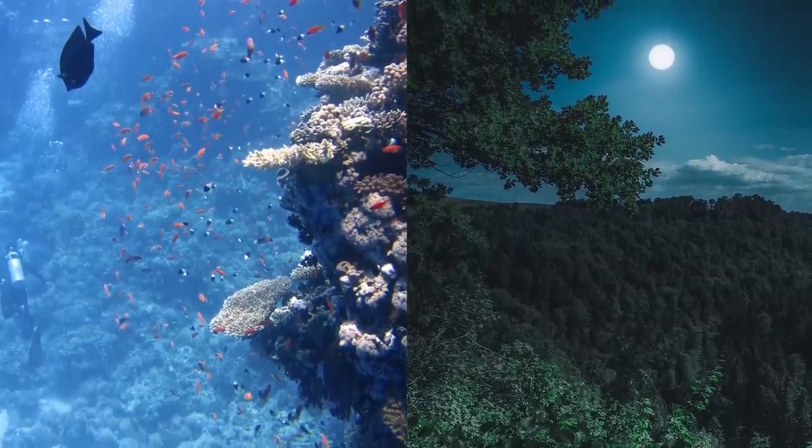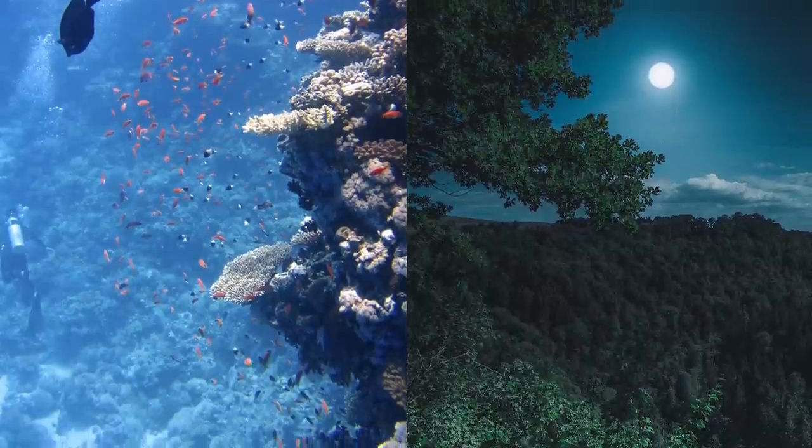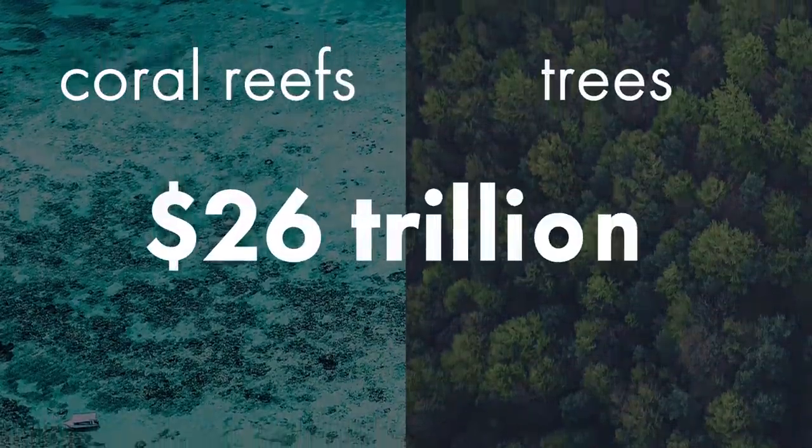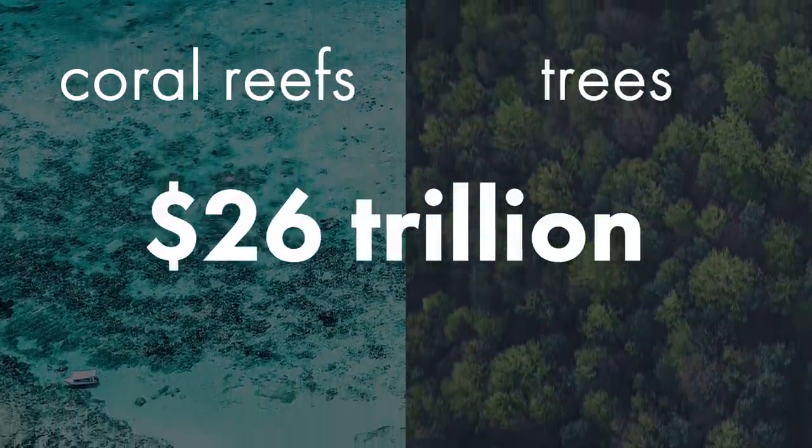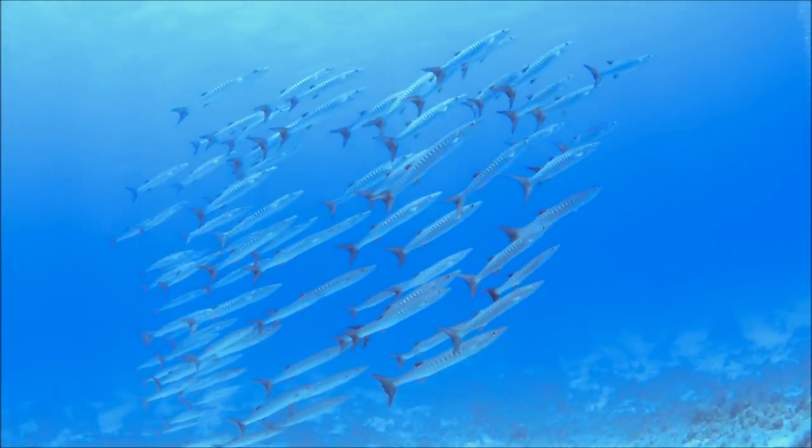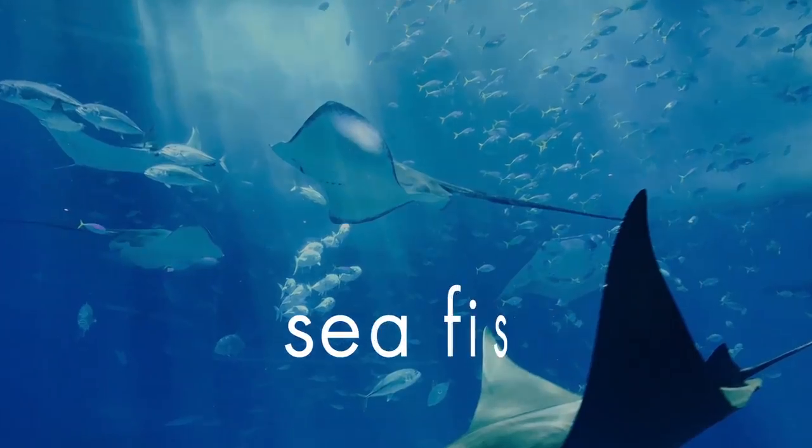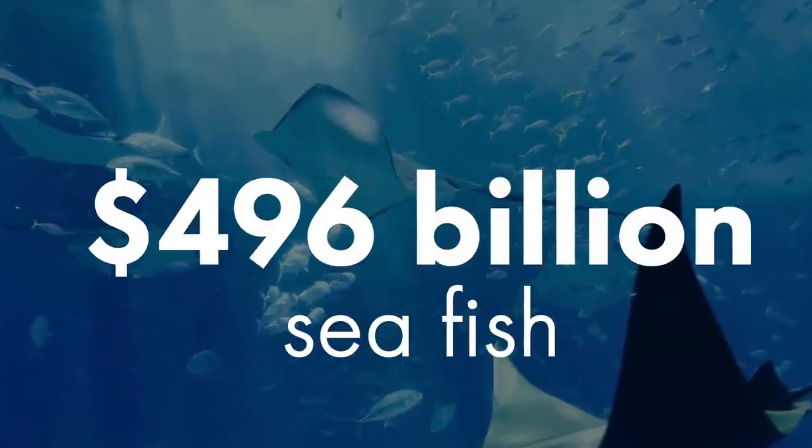Trees and coral reefs, which form the basis of our ecosystem, are estimated at 26 trillion dollars. Seafish and plankton that clean our oceans and feed us cost about 496 billion dollars.